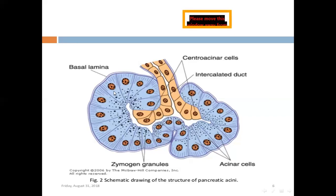These three to four cells are the beginning of the ductal part. Now let's go part by part. First, the acinar cells are pyramidal in shape, as we see, and are based on a basal lamina.